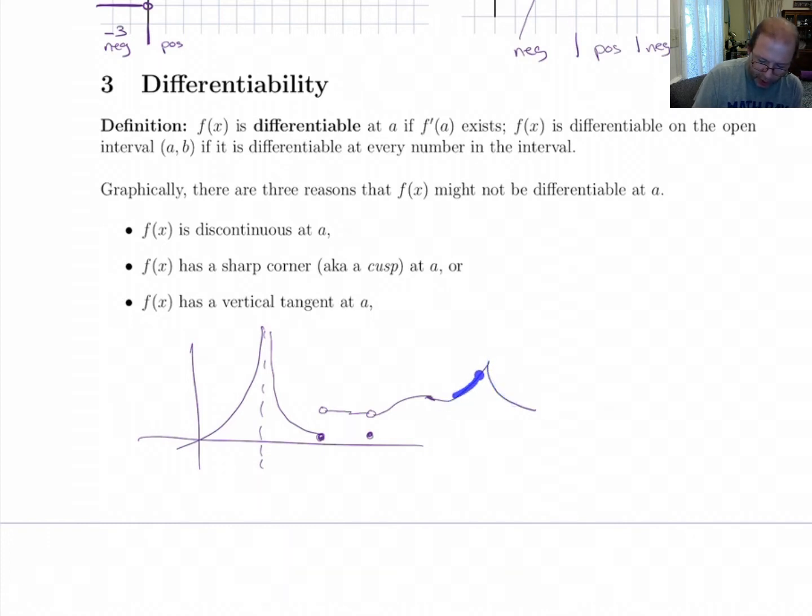It doesn't smoothly go from positive to negative. It jumps immediately from some big positive value to some negative value. It doesn't smoothly go there through zero.